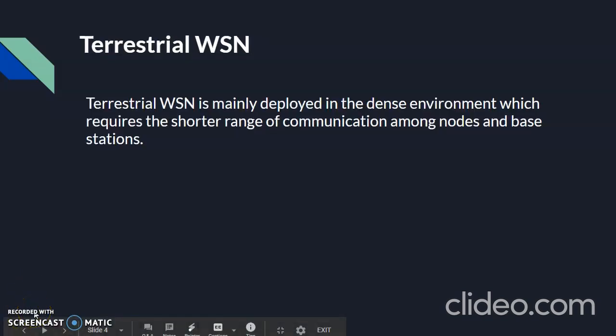What is Terrestrial WSN? Terrestrial WSNs are capable of communicating with a base station efficiently and consist of hundreds to thousands of wireless sensor nodes deployed either in an unstructured or structured manner. In an unstructured mode, sensor nodes are randomly distributed within the target area, dropped from a fixed plane. The structured mode consists of optimal placement, grid placement, and 2D-3D placement modes.